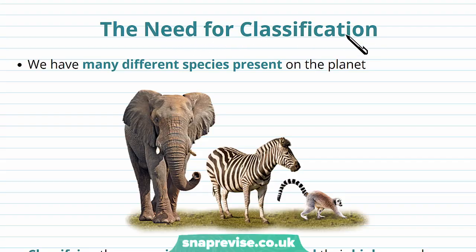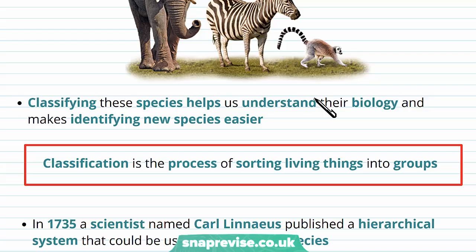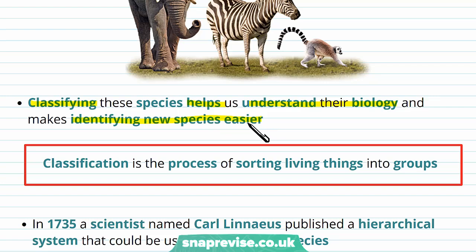The planet has lots and lots of different species present on it and has done for a long time, so we need a way of categorizing them. Classifying all of these species helps us to understand their biology and how they relate to each other, and it also helps us identify any new species we might discover more easily, because we can put them in the right pre-designed categories. Classification is the process of sorting living things on this earth into groups.